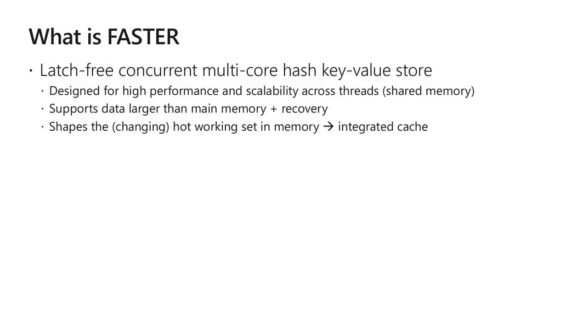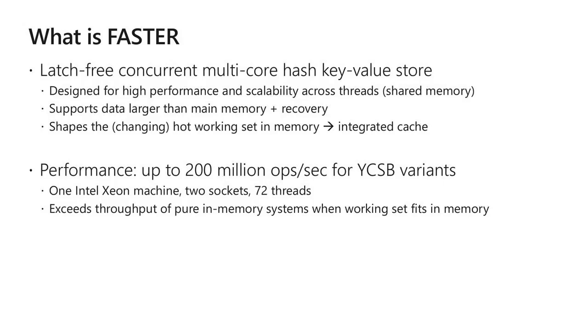FASTER is a latch-free concurrent multi-core hash key-value store designed for a shared-everything environment with threads talking to shared memory and a backing store. It's designed for high performance and scalability across threads — a multi-threaded latch-free system. It supports data larger than memory: you tune the hot working set to exploit temporal locality so hot records stay in main memory while cold data spills to secondary storage, such as Azure Blobs or cloud storage. Performance is very good when the working set fits in memory — we outperform pure in-memory data structures by significant margins and are orders of magnitude better than systems handling larger-than-memory data.